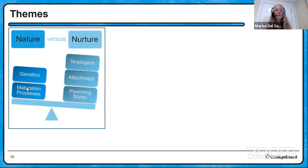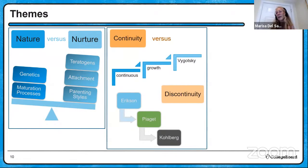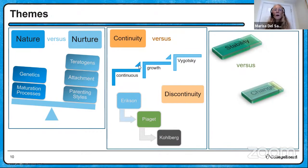When we talk about themes of development, we have nature versus nurture — to what extent are you who you are due to genetics or due to your environment? Then continuity versus discontinuity: Erikson, Piaget, and Kohlberg had stages of development — discontinuous development — where you accumulate skills and knowledge and then move to the next stage. Vygotsky looked at continuous growth, where you learn one skill and can climb to the next. And of course we have to look at what stays the same and what changes over time, since some traits are stable and others change.